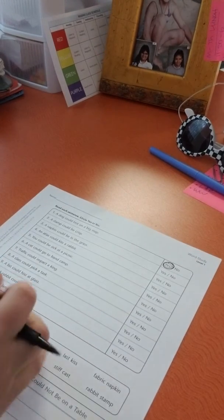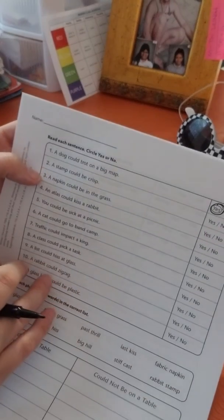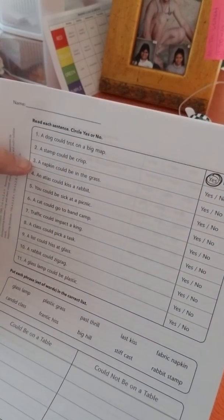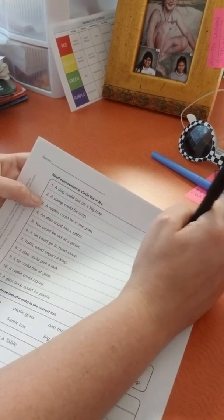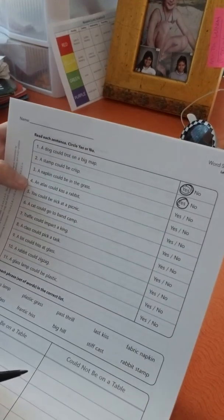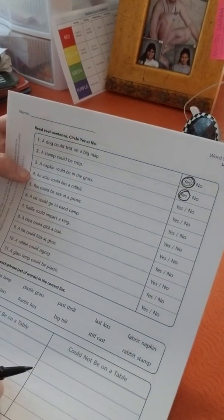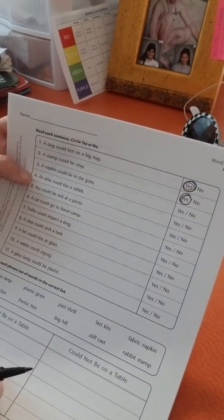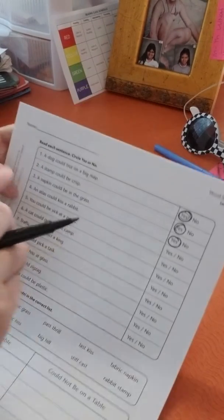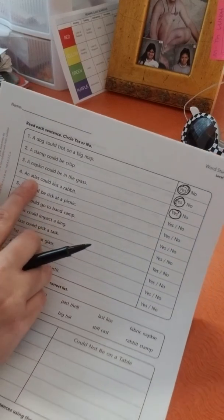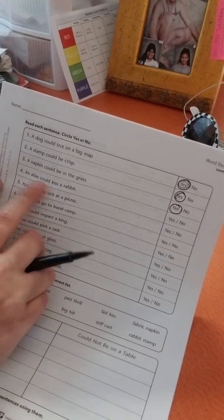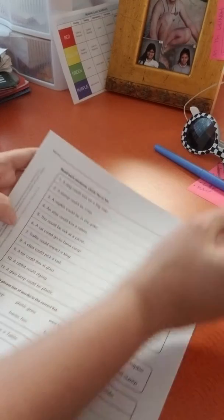And then a stamp could be crisp. You're going to circle yes for that one too. Let's see if we can find one that has a no. So a napkin could be in the grass, yes, you could see a napkin in the grass. An atlas could kiss a rabbit. An atlas is like a big map, right? They can't kiss things, so we know that this one is no.